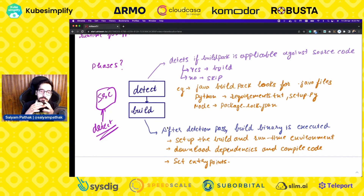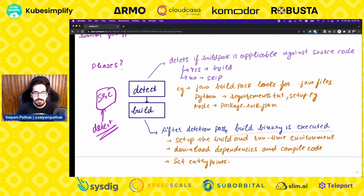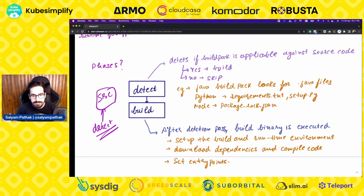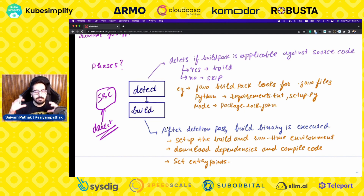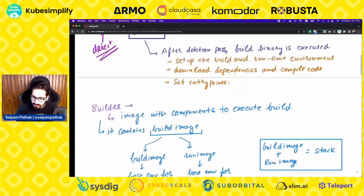In the build phase, after detection passes, the build binary is executed. It sets up the build and runtime environment, downloads all the dependencies, compiles code if required, and sets all the entry points.